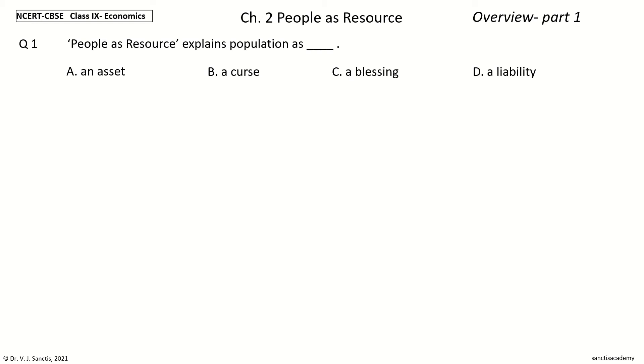This contains 23 questions. Question 1: People as Resource explains Population as ___. The options are: An asset, a curse, a blessing, a liability. Your time to choose. And the answer is: An asset. So, People as Resource explains Population as an Asset.